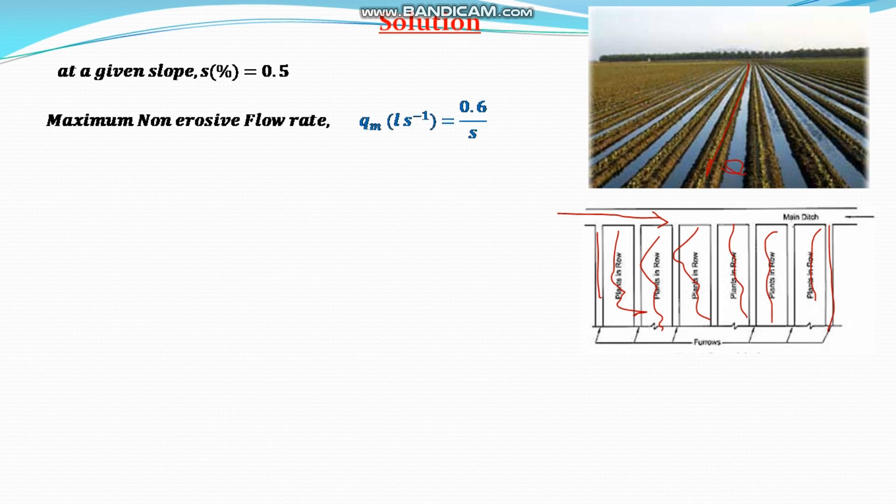qm is called the maximum non-erosive flow rate in liter per second unit, and that will be equal to 0.6 by s. s is the slope in percentage. In this case the slope is given as 0.5. Therefore, the non-erosive flow rate will be equal to 0.6 by 0.5, that is 1.2 liter per second.